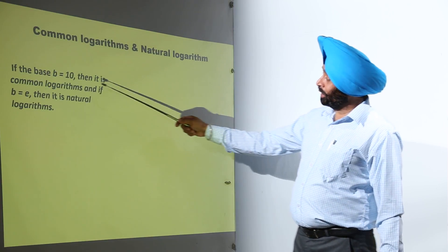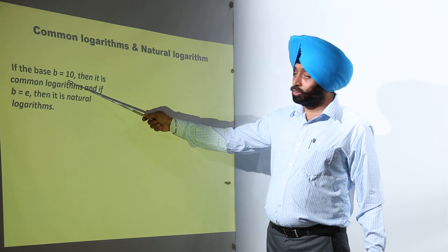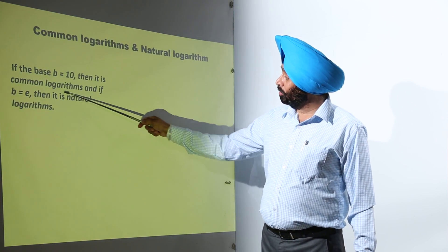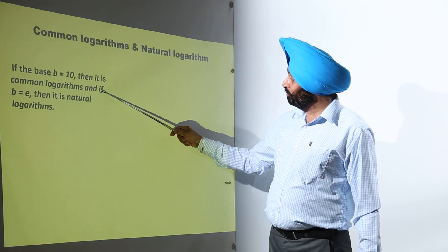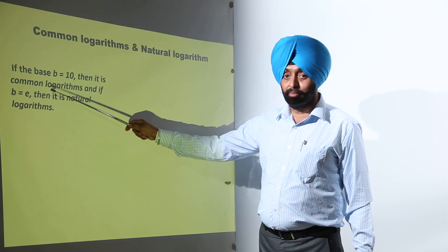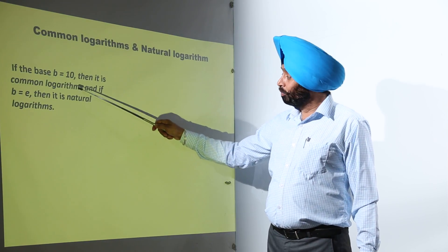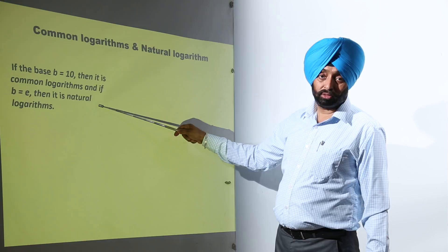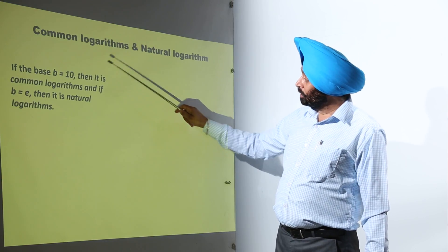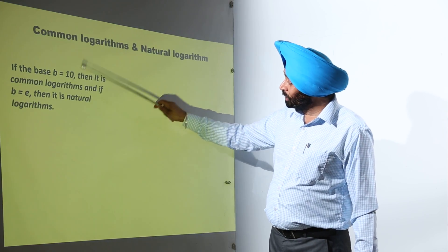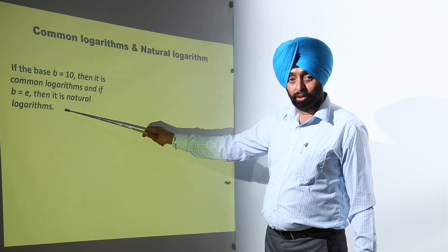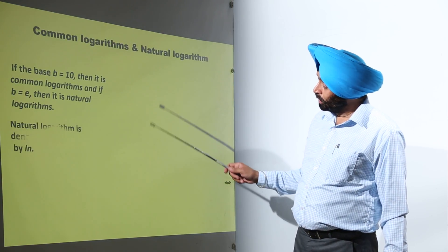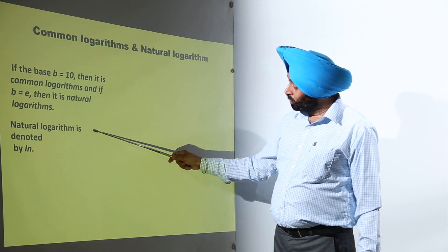If the base b is equal to 10, then it is a common logarithm. And if the base b is equal to e, then it is a natural logarithm. Is it clear? Common logarithm and natural logarithm.